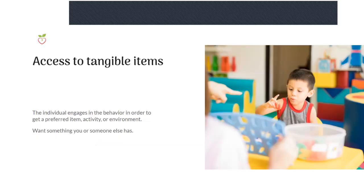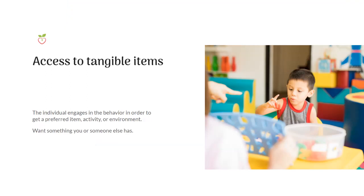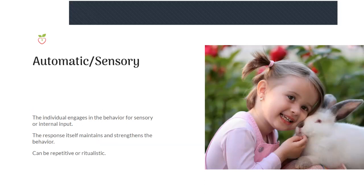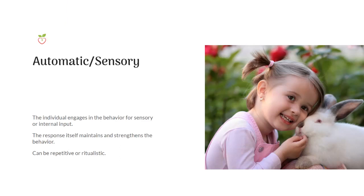The next function is access to tangible items: the individual engages in the behavior to get a preferred item, activity, or environment — they want something that you or somebody else has. This is a big one with younger kids. The next function is automatic sensory — not as common — where the individual engages in behavior for sensory or internal input. The response itself is what maintains and strengthens the behavior. An example from my own life is twirling my hair while watching TV without even realizing I'm doing it.